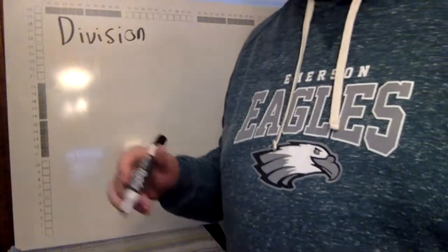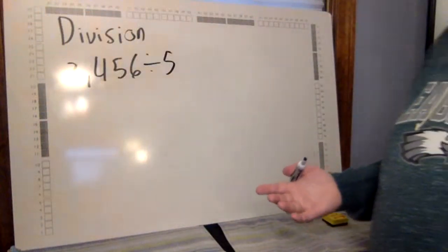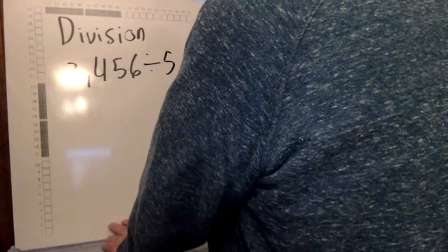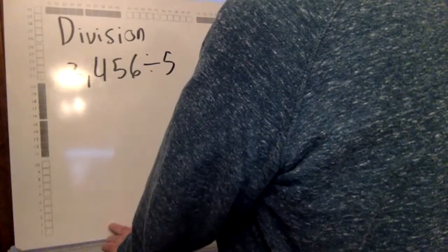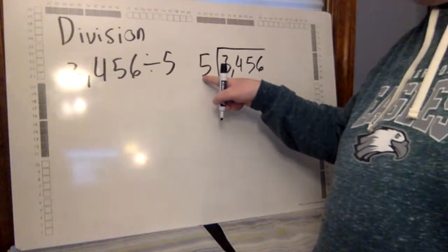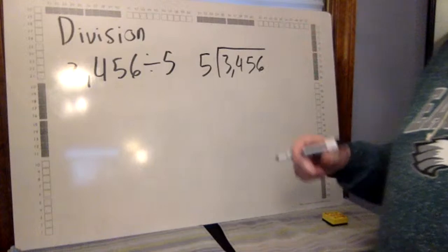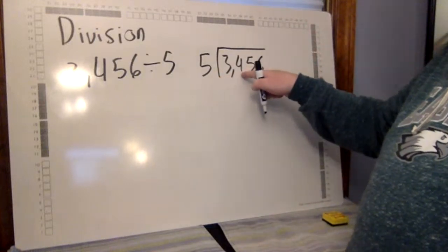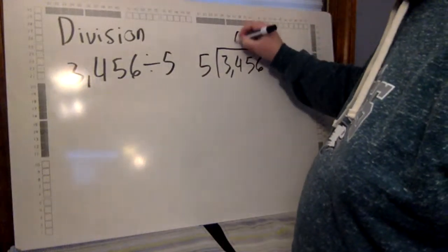The next thing I want to look at is the bring-down method, which is the more traditional method of doing division. Let's say I had 3,456 divided by 5. The way the bring-down method looks is: I put my 5 here, and 3,456 over here. 5 goes into 3 zero times, so I move over to 5 going into 34.